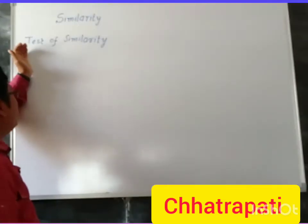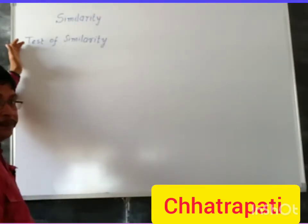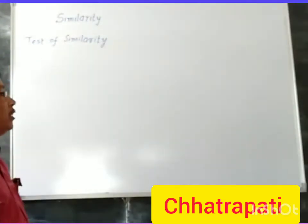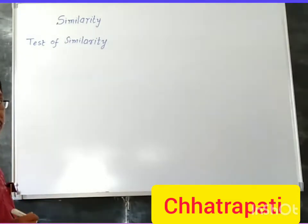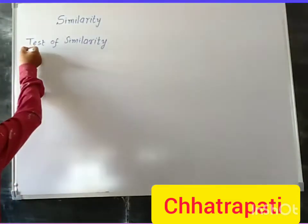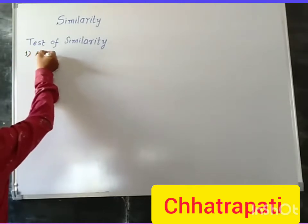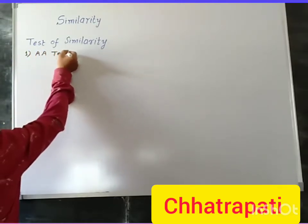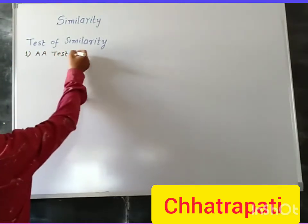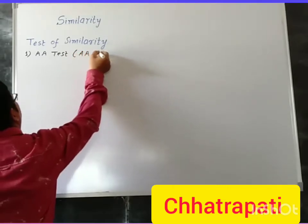Here is an important topic: the test of similarity. This is a very important topic to show that two triangles are similar. Our first test is the AA test, also called the AA test.